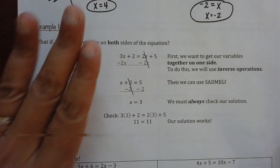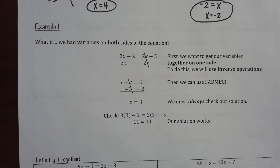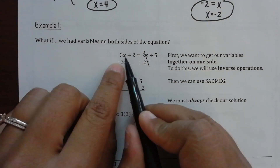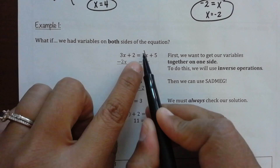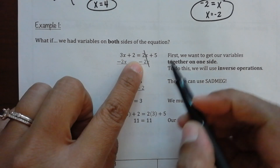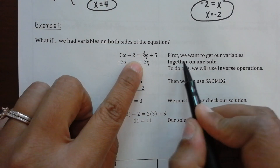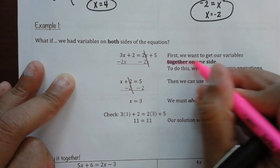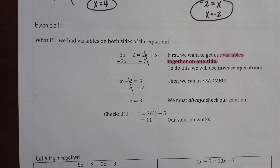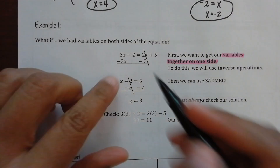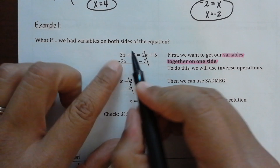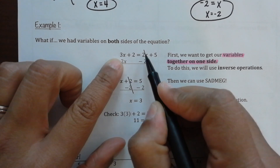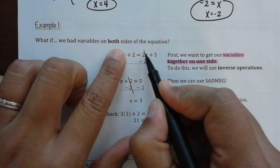I'm going to talk through this one like I typically do so you can see all the steps and the pieces. I start off with 3x plus 2 equals 2x plus 5. First, we want to get our variables together on one side. So, I'm going to look at my smallest variable. Between 3 and 2, what's smaller? 2. So, how would I get rid of a positive 2x?